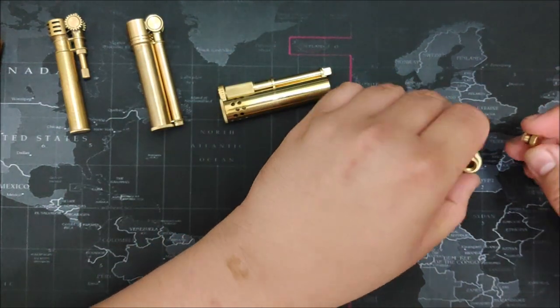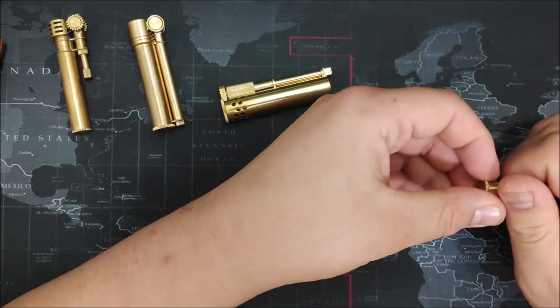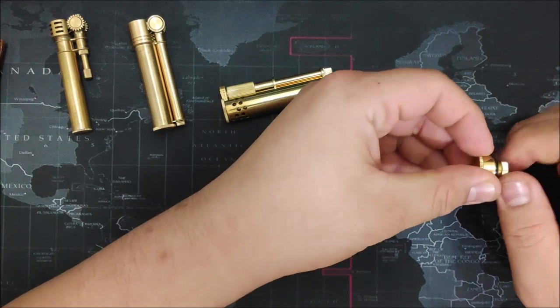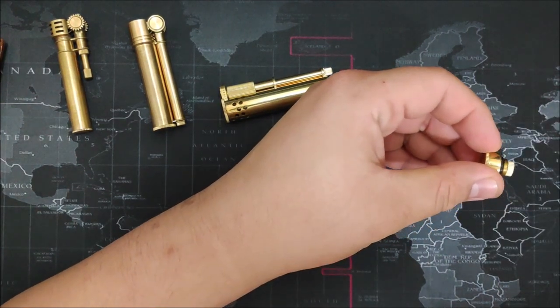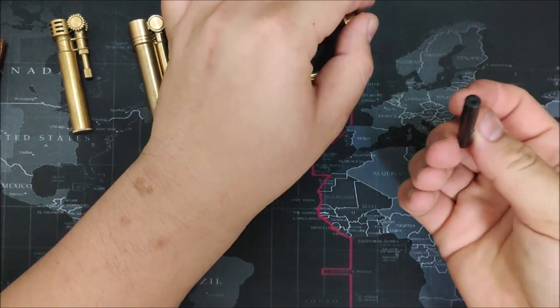So I find that to be a positive. I do sell the Douglas flints for like 15 ringgit for a tube of five. I got it right here. So they give it to you like this.